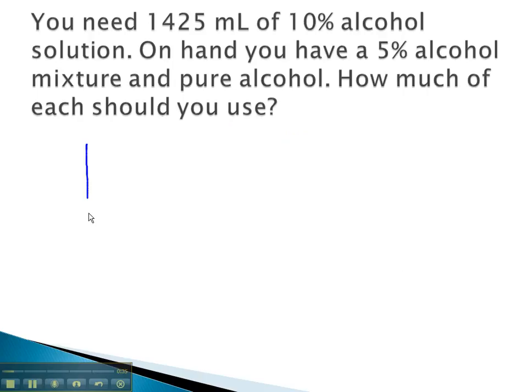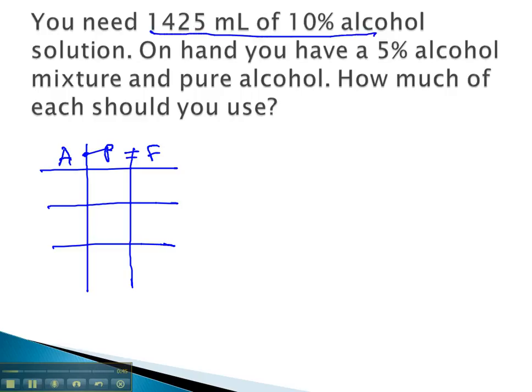In this mixture problem, we need 1,425 milliliters of 10% acid. The amount times the part is going to equal the final. 1425 and 10% is what we want at the end. 10% as a decimal is 0.1.